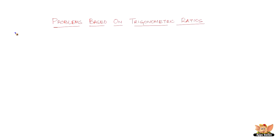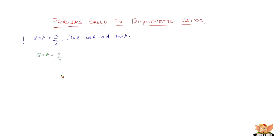In this video let us solve more problems based on trigonometric ratios. Here we have a question: if sine of A equals 3 by 5, find cos A and tan A. The data we have is only sine A equals 3 by 5. In the previous problems we used to define the trigonometric function and then come to the answer, but here we need to go in reverse.